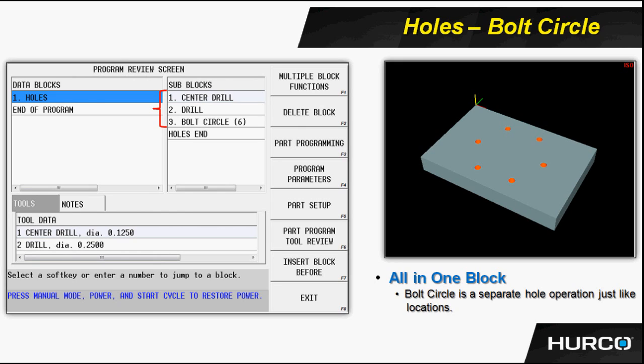Here we see an example of a holes block, it's block one, with a center drill and a drill. In place of the locations to put in the X and Y location that we did in the previous prints, this is just going to use a simple bolt circle.